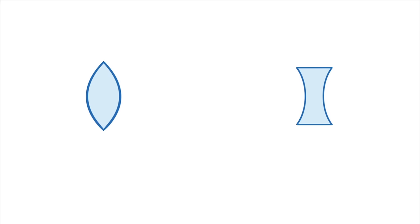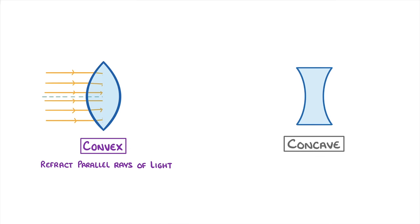Now as we can see here there are two main types of lenses, convex and concave. Convex lenses have an outwards bulge in the centre which causes them to refract parallel rays of light inwards to a single point which we call the principal focus.